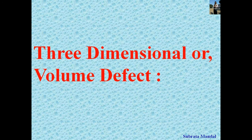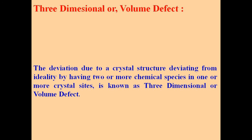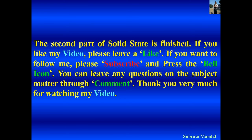Lastly, I define three-dimensional or volume defect. The deviation due to a crystal structure deviating from ideality by having two or more chemical species in one or more crystal sites is known as three-dimensional or volume defect. The fourth part of Solid State is finished here. If you like my video, please leave a like. If you want to follow my other lectures, please subscribe and press the bell icon. You can leave any question on the subject matter through comments. Thank you very much for watching my video.